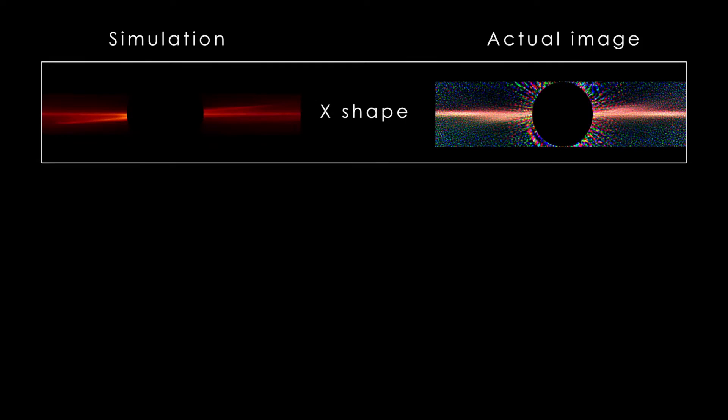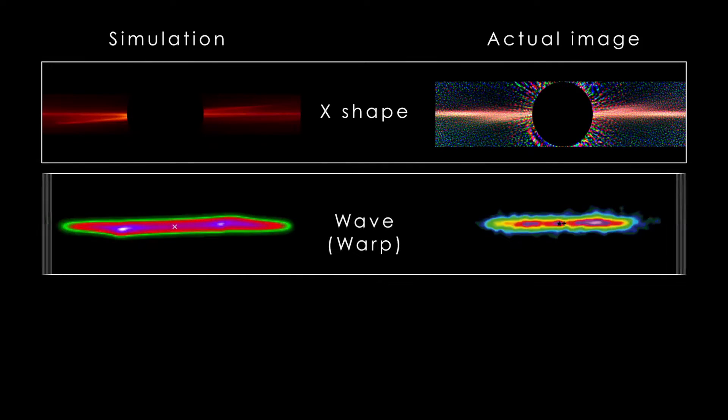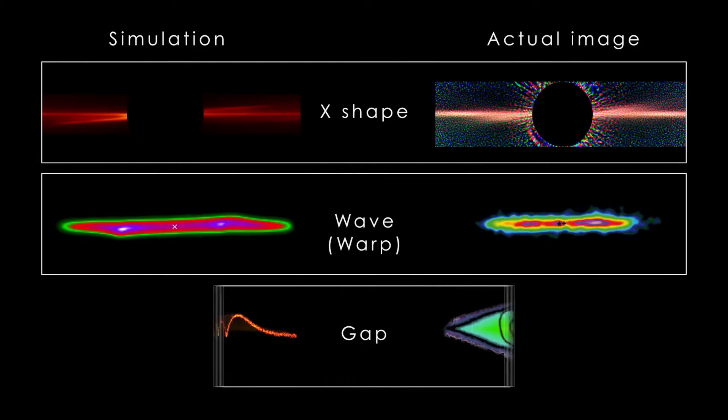The model painted one picture of Beta Pictoris that showed us the origin of the X pattern, the origin of the warp, and also a bunch of other details about the system. Our simulation is the first model that can capture the 3D structure of the disk, as well as the collisions that are occurring between the planetesimals in the disk.